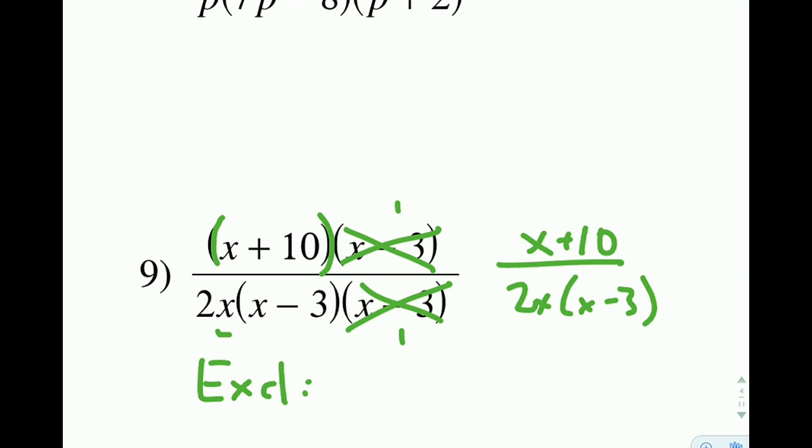And if we look at this x kind of out by itself, we could plug in a 0 there and cause the whole denominator to go to 0. So 0 is going to be an excluded value. We could plug in a 3 here, and then 3 minus 3 would go to 0. So that would cause it to be an excluded value.